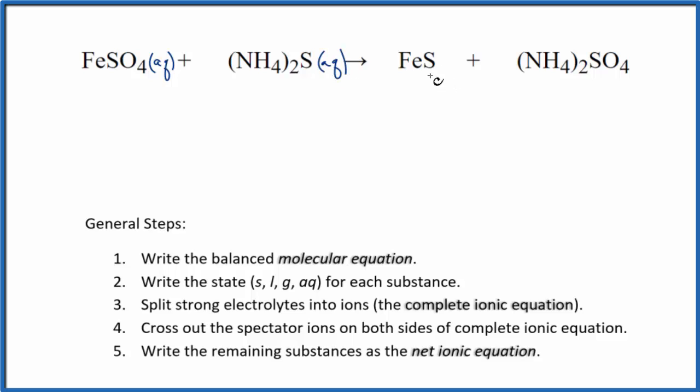This FeS, in general sulfides are insoluble. Iron sulfide is insoluble, so we're going to write an S. It's going to be a solid. That means when these two substances here react, this will be a precipitate. It'll fall to the bottom of the test tube as a precipitate.